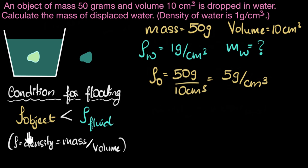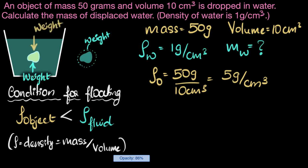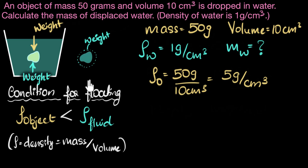Can I do the same thing as before? Can I say the buoyant force equals the weight of the displaced liquid, and the stone's weight balances it, so the two weights are equal and their masses are equal? No, I can't. Can you think why? This is super important — why can't I say their weights must be the same this time?